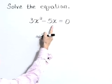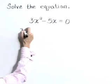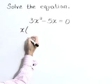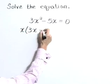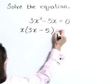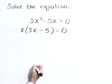In looking at these two terms, there's a greatest common factor of x. So let's rewrite the left-hand side as x times 3x minus 5. That's still equal to 0.